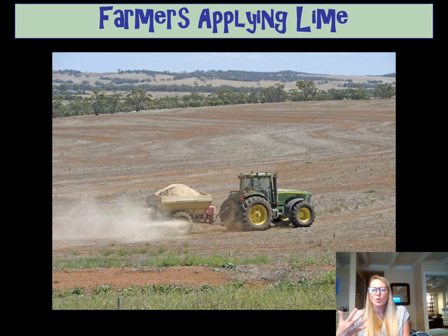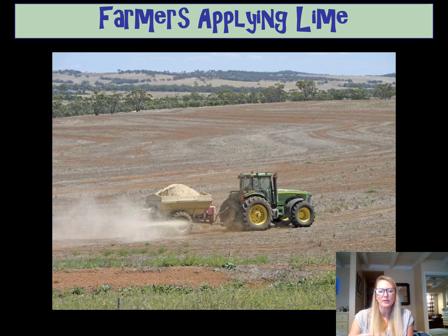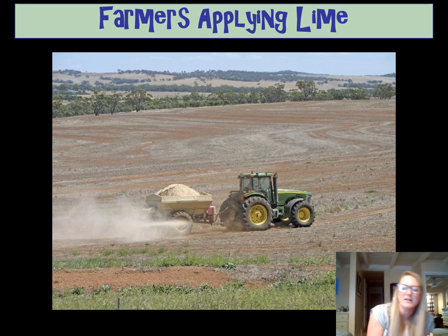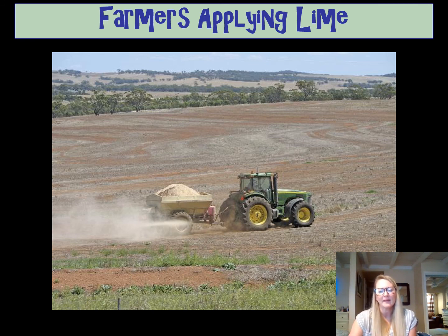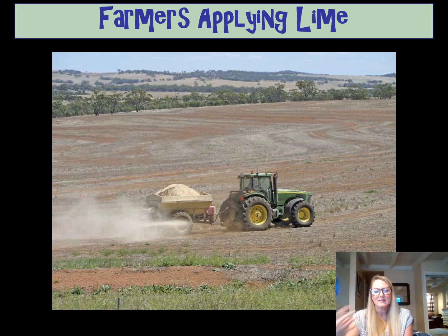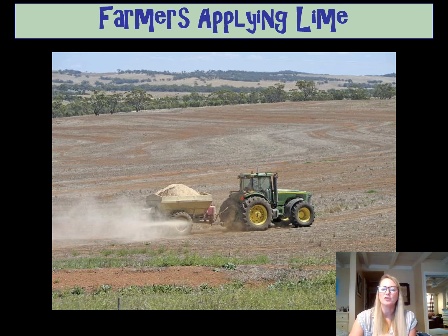Another cool application — particularly in AP Environmental Science — is when farmers have acidic soil with too much acid. What they'll do is grind up limestone, which is a base, and apply lime to their fields. In this picture, you can see a tractor applying lime to fields. Lime, being a base containing hydroxide, attaches to the hydrogen ions and neutralizes the soil so it reaches a neutral pH, allowing things to grow.